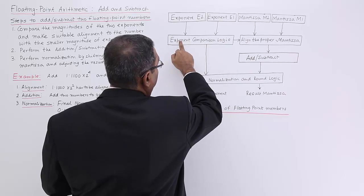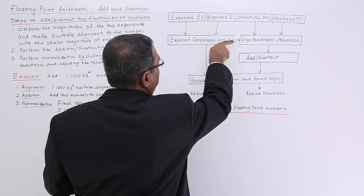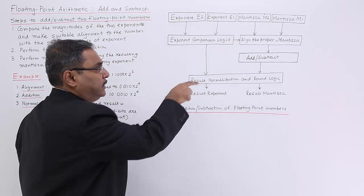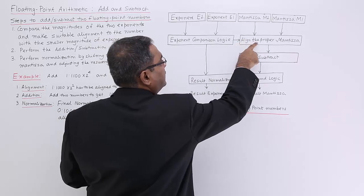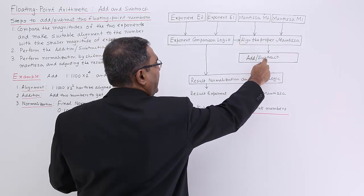These two components will be compared and the logic that who has to be adjusted for how many bits place. That will be the input going to this align the proper mantissa and then you perform this add or subtract.